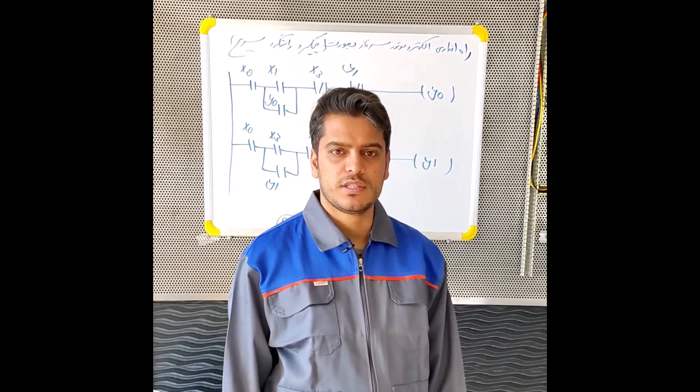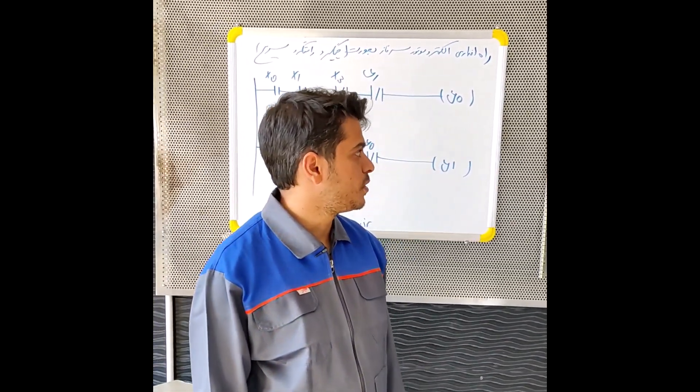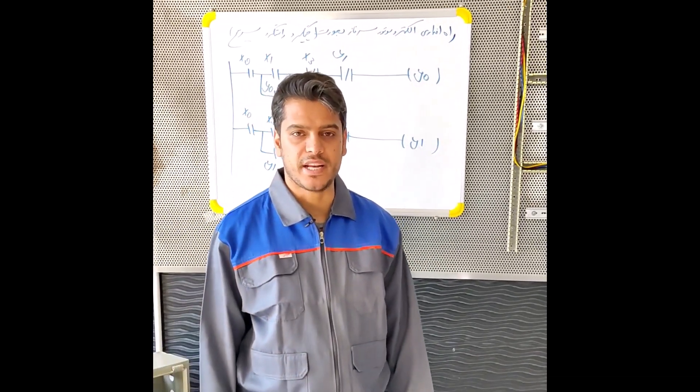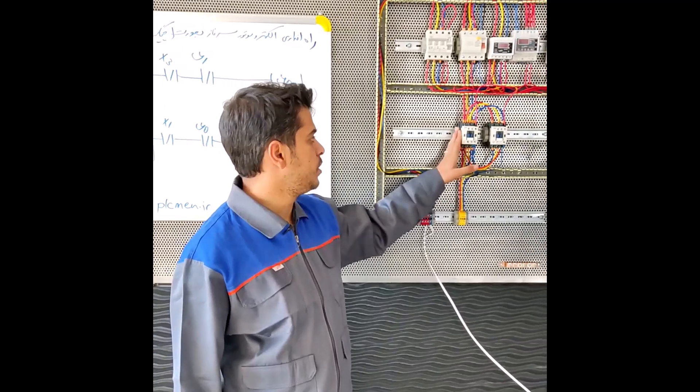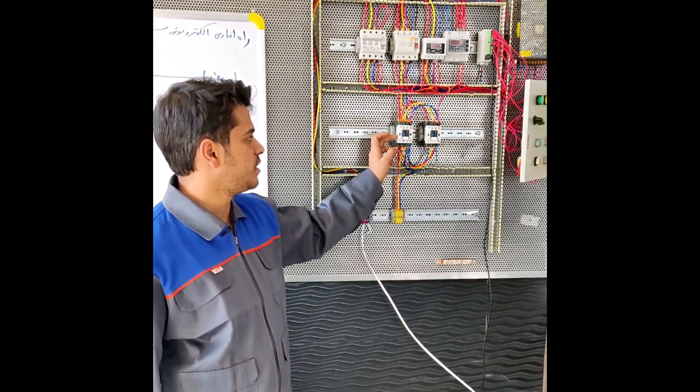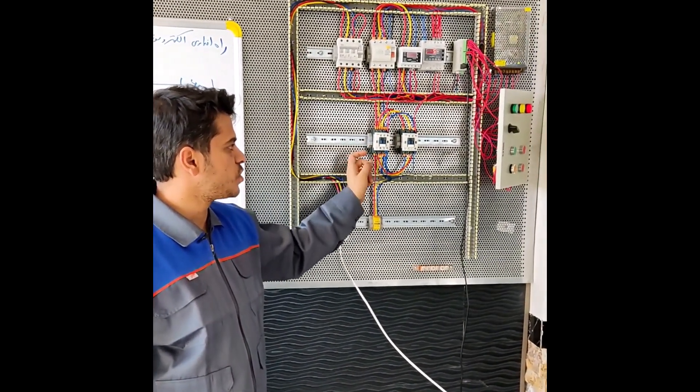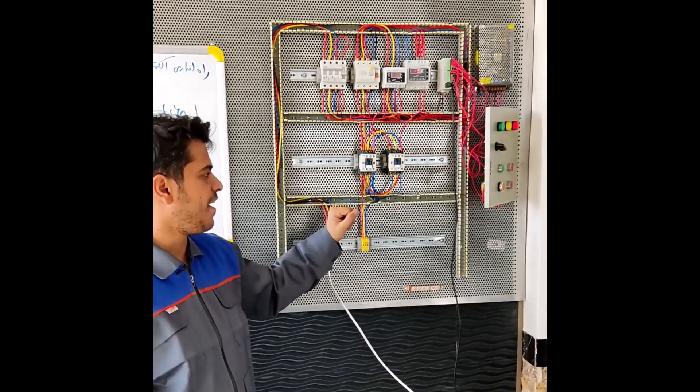Hello, in this educational video we want to teach how to program the start of the electromotor with fast right-hand rotation. In the power circuit we use two contactors, and they use one contactor to replace the two phases.